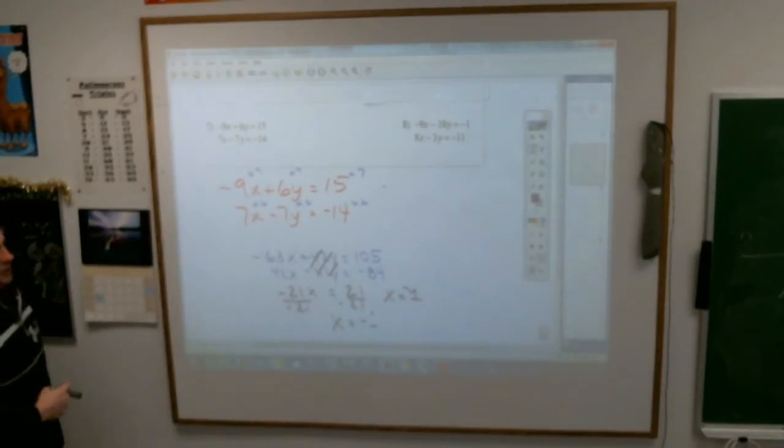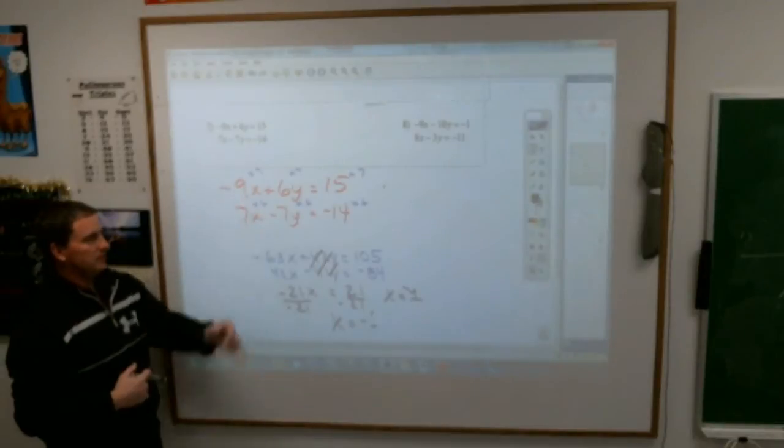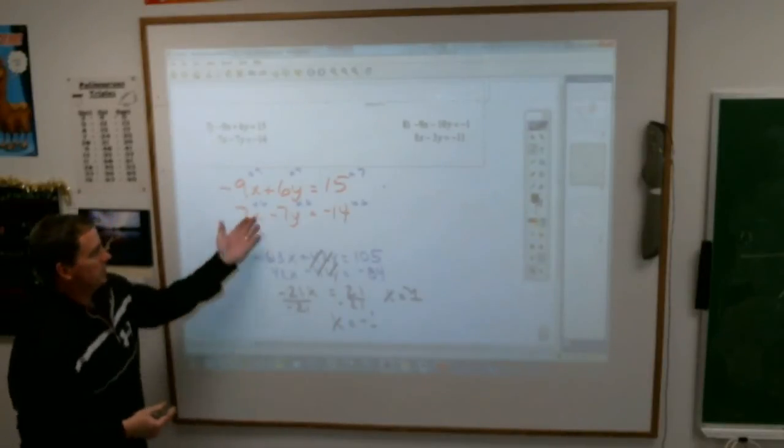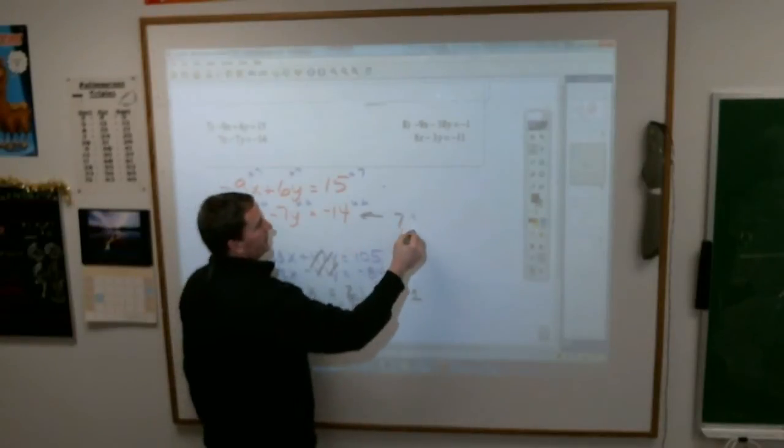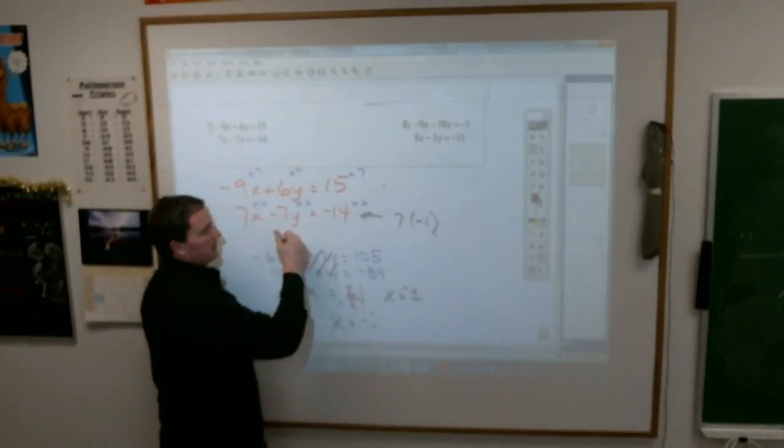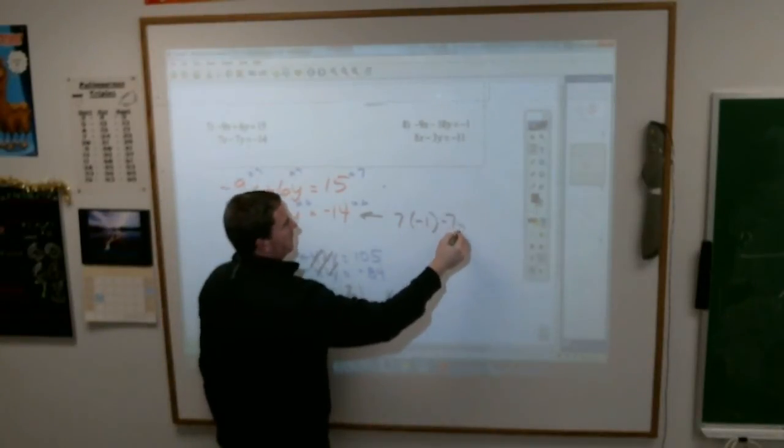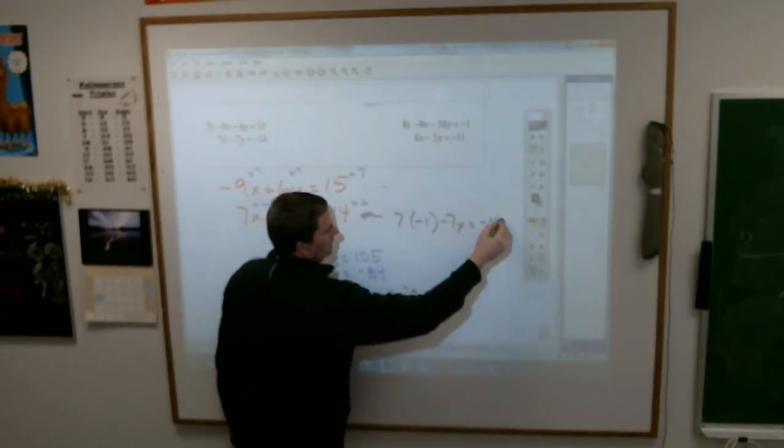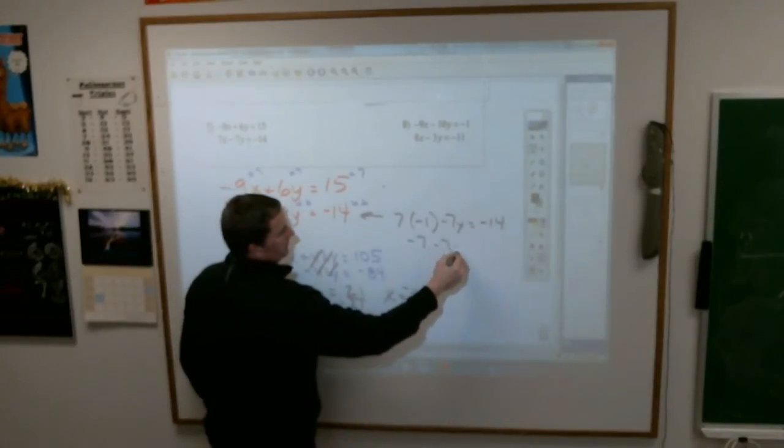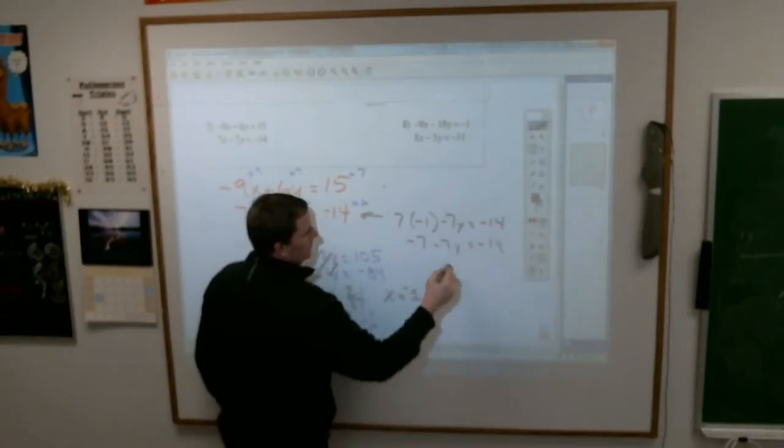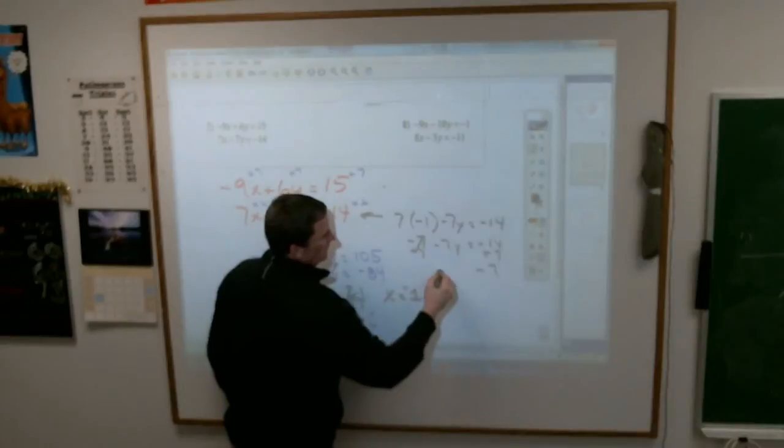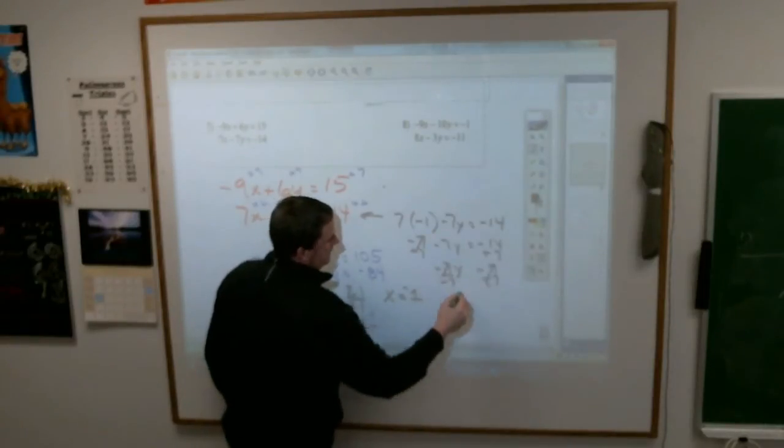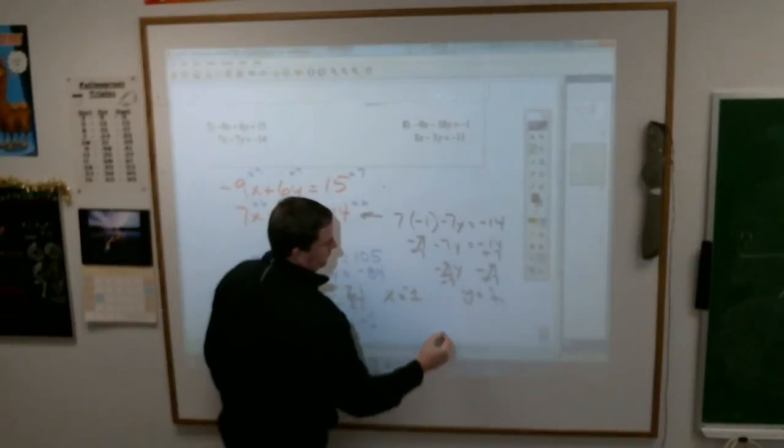And again, it doesn't matter which of the four equations you have. I don't know, I'm just going to go with this one. Let's pick this one here. 7 times negative 1, 7 times x, minus 7y equals negative 14. Negative 7 minus 7y equals negative 14. Add 7. Add 7. I get negative 7y equals negative 7. Negative 7. Negative 7. A lot of 7s. Y equals positive 1. Okay.